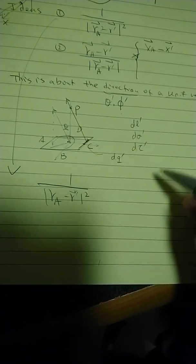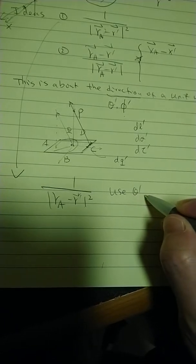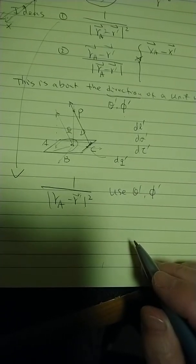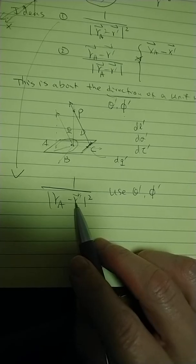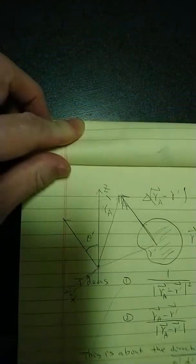So our goal is the following. We're going to use theta phi prime to replace this r prime. But they are not the same thing. How to deal with that? Well, here is a hint what you can see.